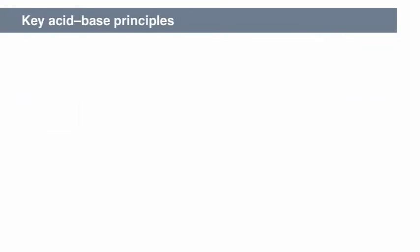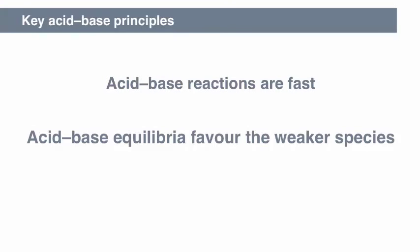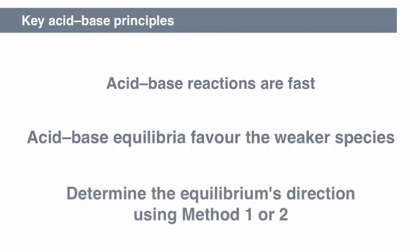When analyzing acid-base chemistry in any more complex reaction, the key principles always hold true. Acid-base reactions are fast. Acid-base equilibria favor the weaker species. The direction of the equilibrium can be determined using either method 1 or method 2.